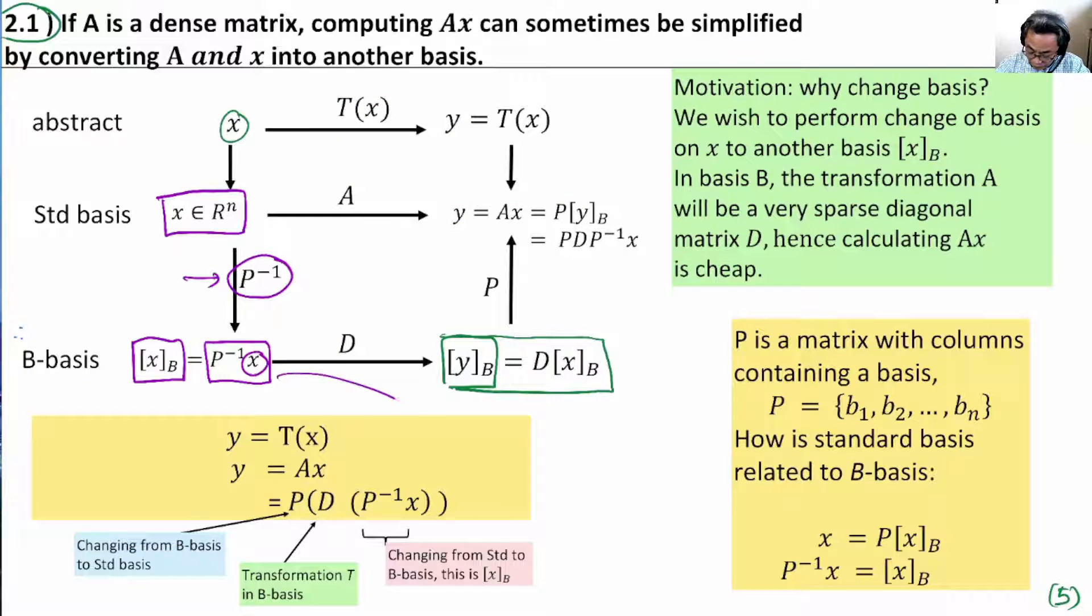So, this fact is also here. Now, the operation on the B basis is D times X of B. This gives us Y of B in the B basis. So, we reach this point in the equation.